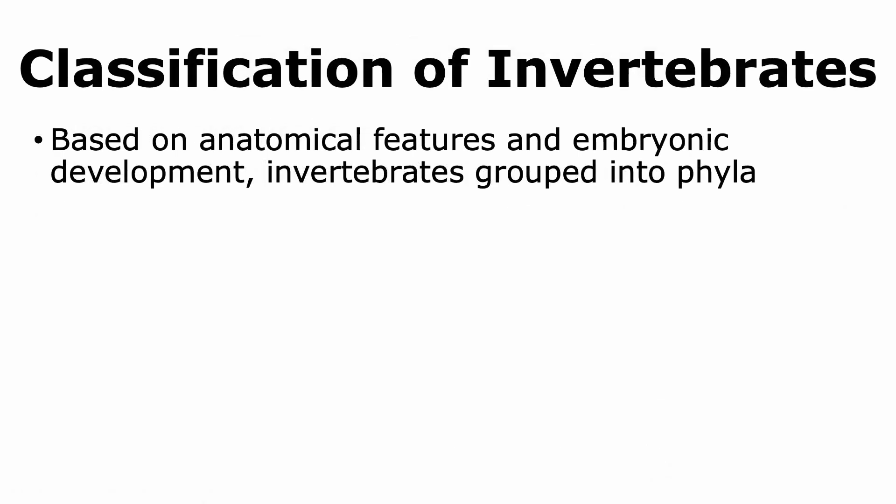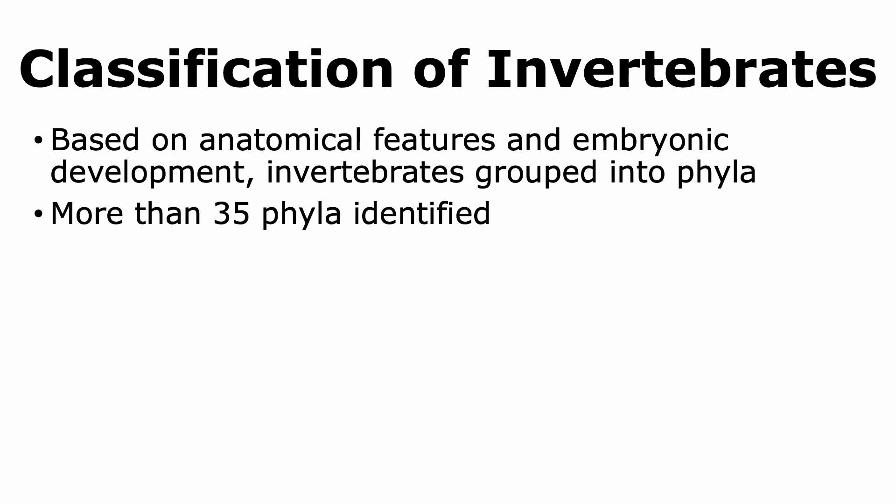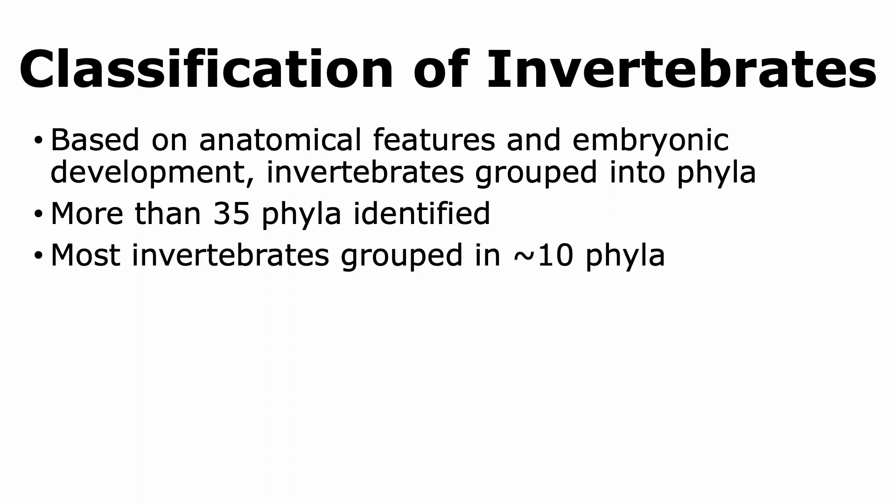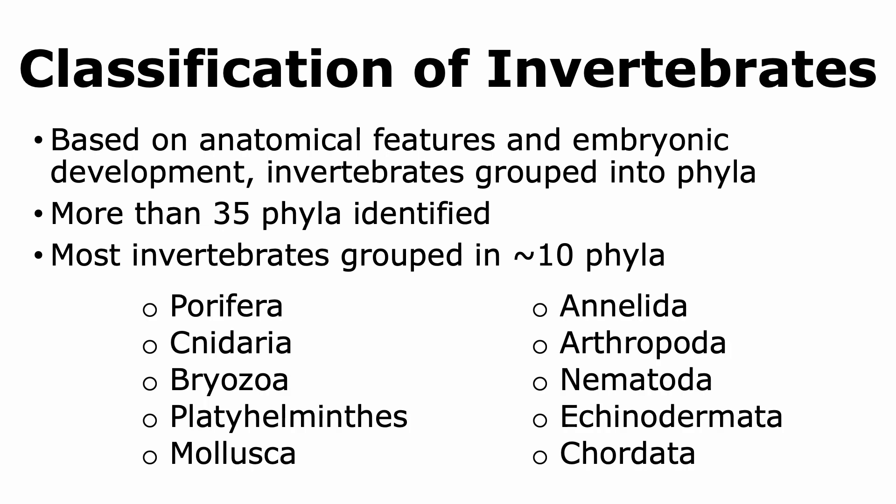Invertebrates are grouped into different phyla based on their anatomical features as well as embryonic developmental patterns. More than 35 phyla have been identified, but most invertebrates can be grouped into around 10 phyla. It should be noted that the phylum Chordata includes not only invertebrates, but also vertebrate animals.